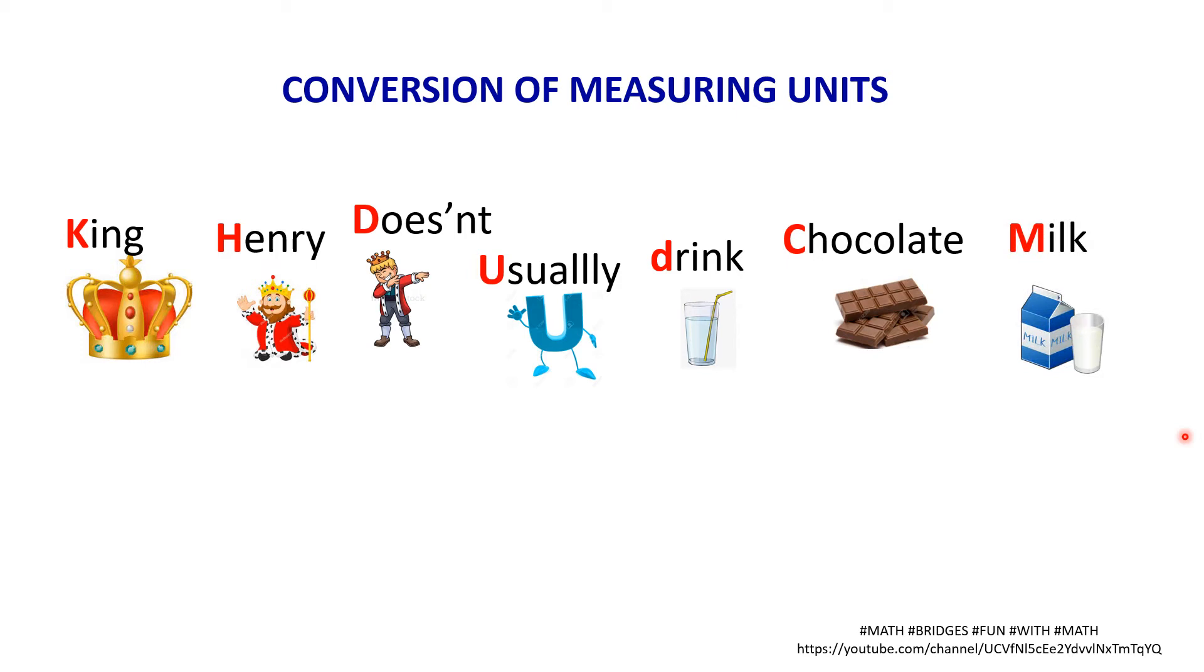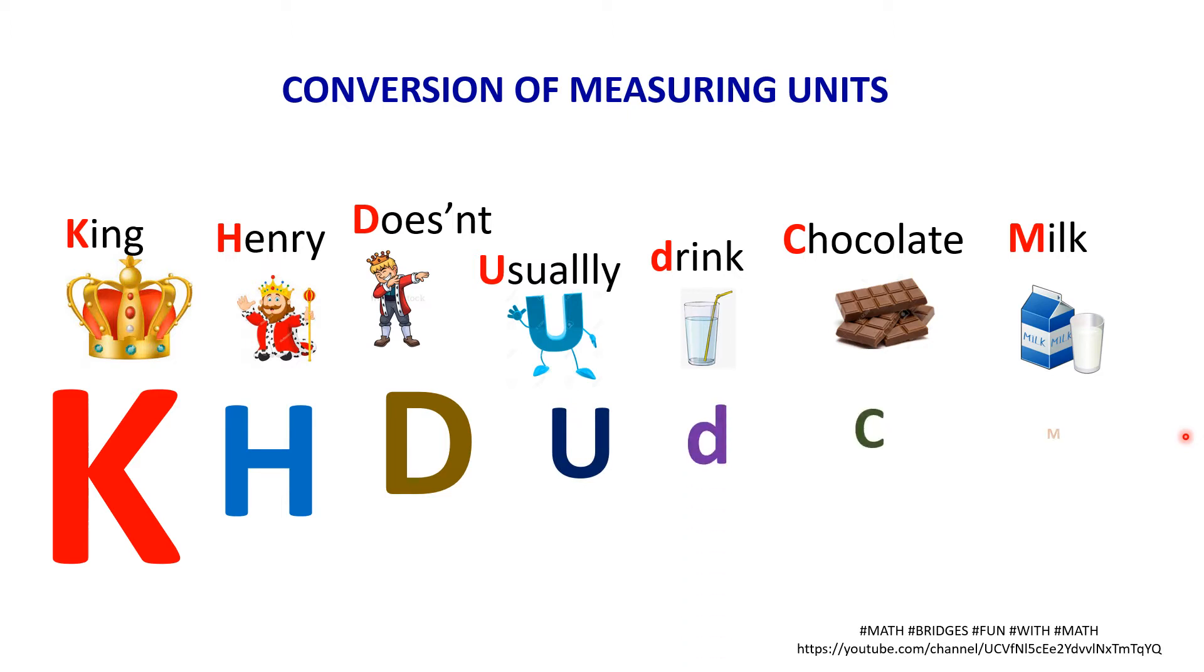You all should remember the secret. You can repeat after me: King, K for King; Henry, H; does not, D; usually, U; drinks, small d; chocolate, C; and milk, M. You should remember this mnemonic or the secret to do the conversions.